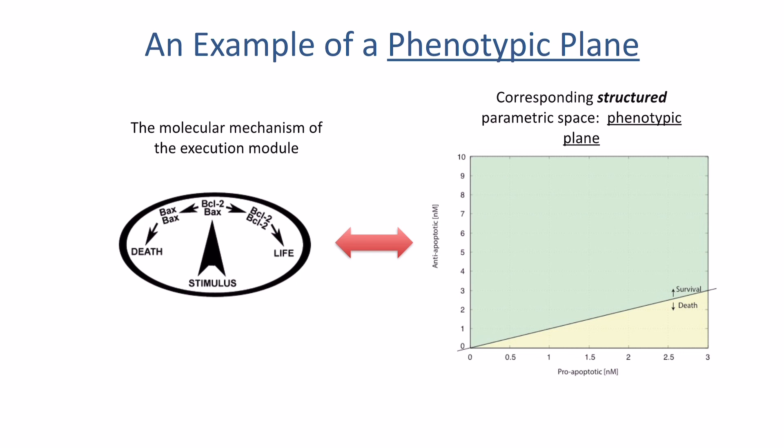So this boundary can be seen even in this phenotypic plane, where on the x-axis is pro-apoptotic proteins, such as Bax. Y-axis is anti-apoptotic proteins, concentration of anti-apoptotic proteins, such as BCL2. Depending on what relative abundances of these proteins one might have, cells would be in different parts on this plane. But there's going to be also this boundary that would separate death outcome from survival.